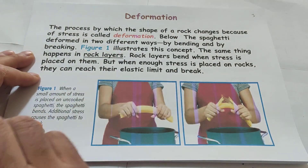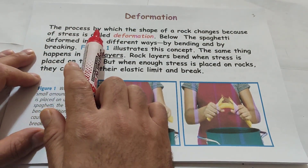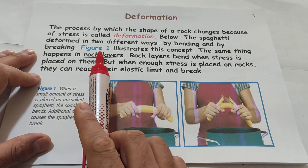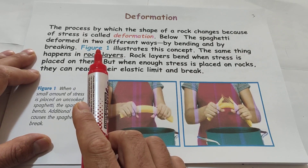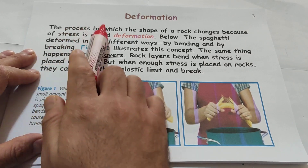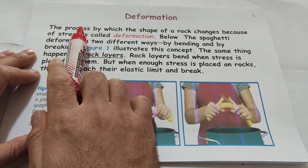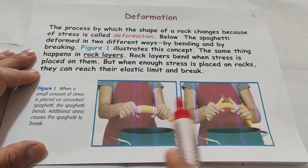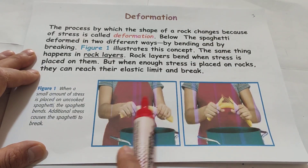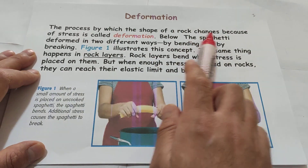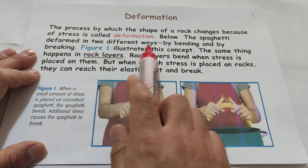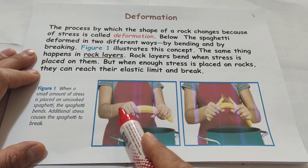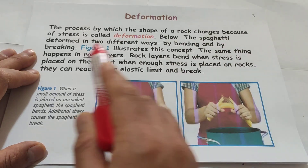Deformation. The process by which the shape of a rock changes because of stress is called deformation. That means the crust layer of earth is going to be deformed. Below the spaghetti, there are two examples of spaghetti — they form in two different ways: by bending and by breaking.